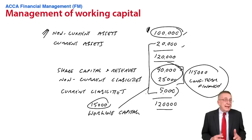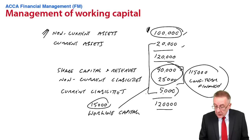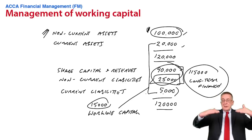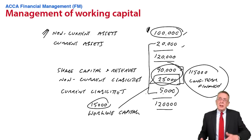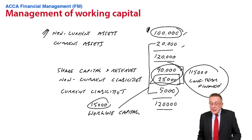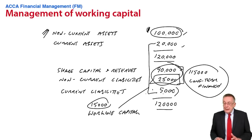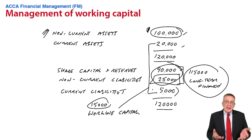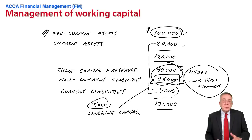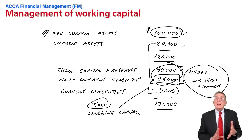On the other hand, short-term finance does tend to be cheaper. If you borrow 25,000 long-term, you're committed to paying interest on 25,000. But working capital fluctuates — receivables go up and down, inventories go up and down — and so from day to day you won't always need the full 15,000. If you're borrowing from an overdraft, as the overdraft goes up and down the interest goes up and down. With long-term finance you're paying interest on the full amount all the time. So short-term finance can end up being cheaper, but is a lot more risky.